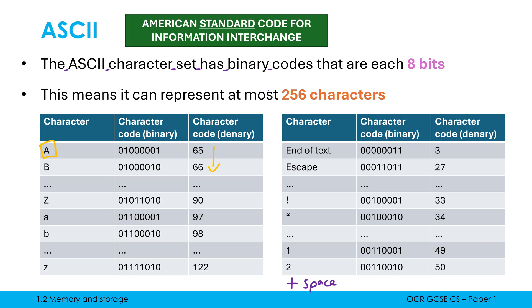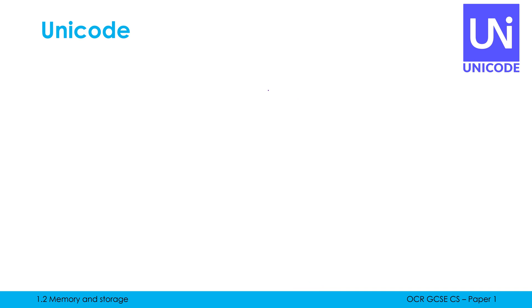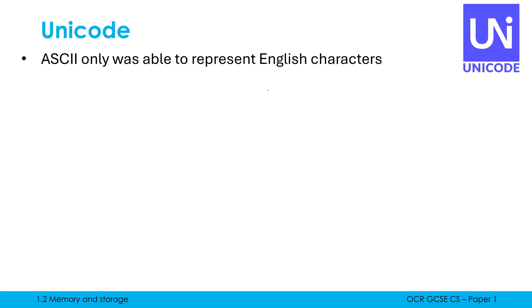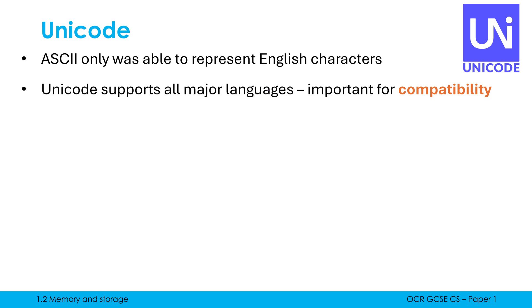ASCII, one of the earlier character sets, has been replaced with Unicode. Unicode is another character set which tries to fix a fairly big problem with ASCII: ASCII was only ever able to represent English characters. 256 characters just isn't sufficient to fit in other languages like Arabic, Cyrillic, and Hindi, which have whole different characters to English letters. There just wasn't space in ASCII's 256 characters, so Unicode was needed to support basically all the languages we need in the world.